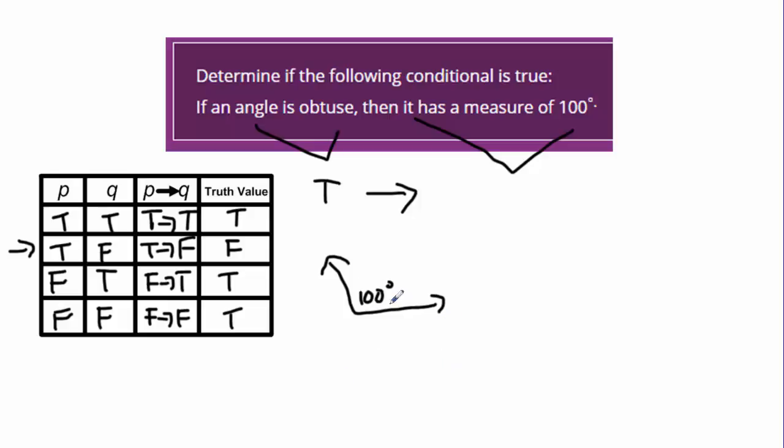So I drew an obtuse angle, right? Obtuse by definition is an angle with a measure between 90 and 180. This is a measure of an angle that's between 90 and 180.